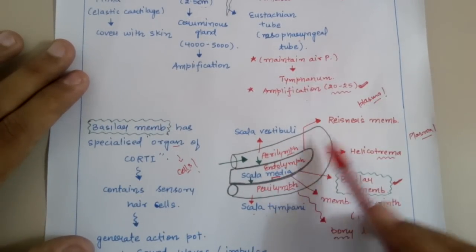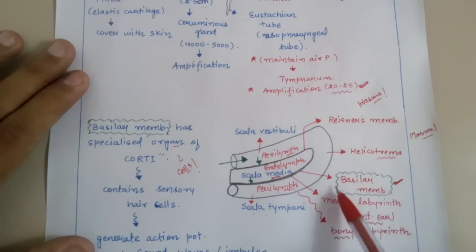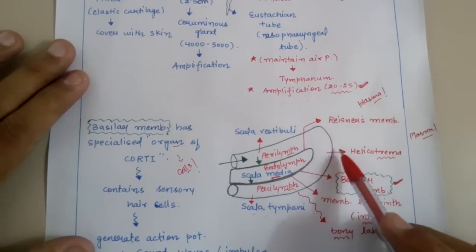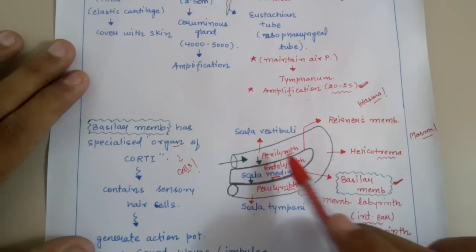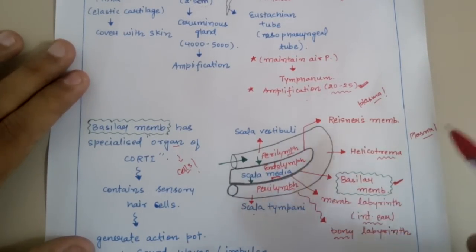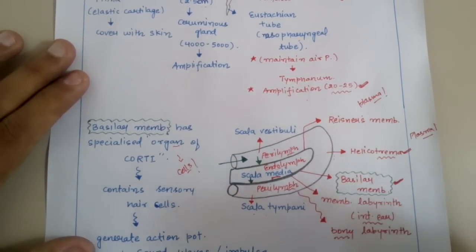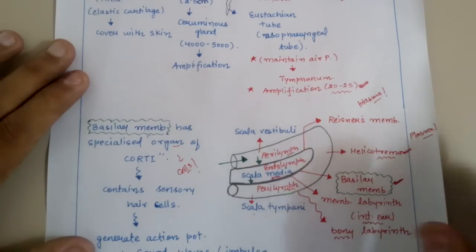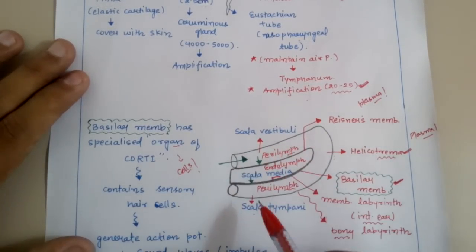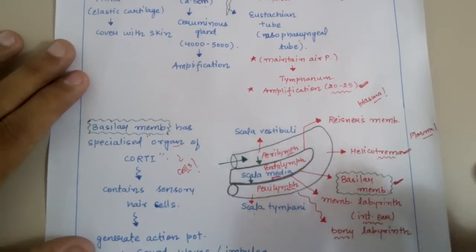The scala vestibule and scala media are joined by Reissner's membrane, and the scala media and scala tympani are joined by the basilar membrane. The area in this diagram where the scala vestibule and scala tympani — the uppermost and lowermost chambers — connect with each other is known as the helicotrema. This is very important from an examination point of view. You must memorize that the place where the perilymph of scala vestibule and scala tympani meets is known as the helicotrema.